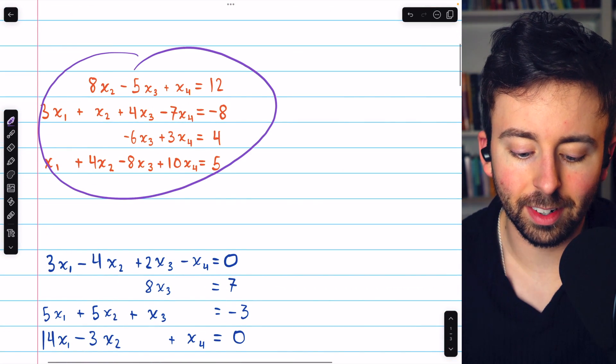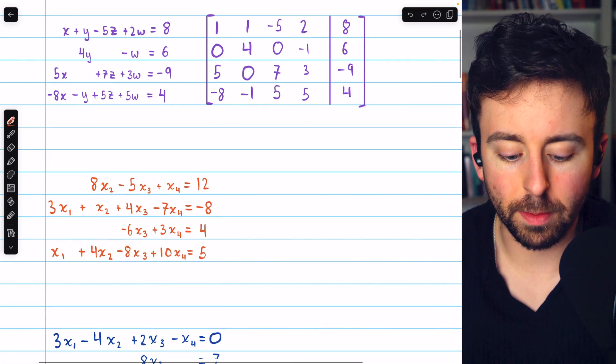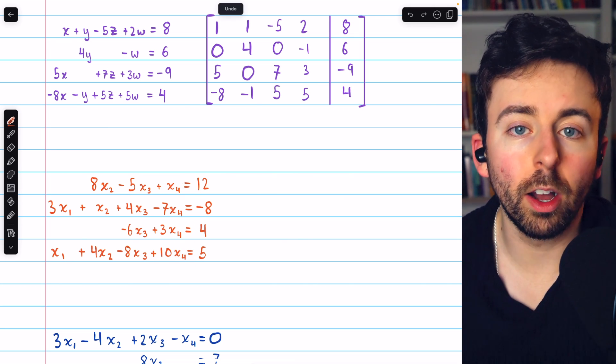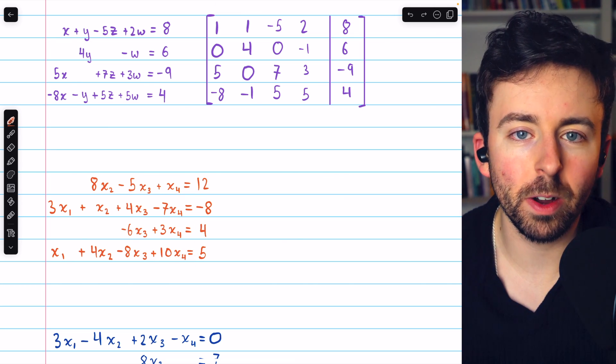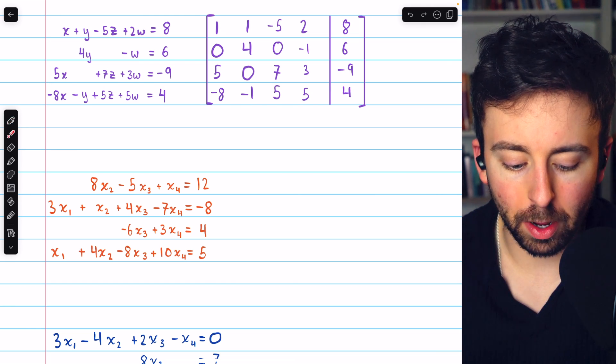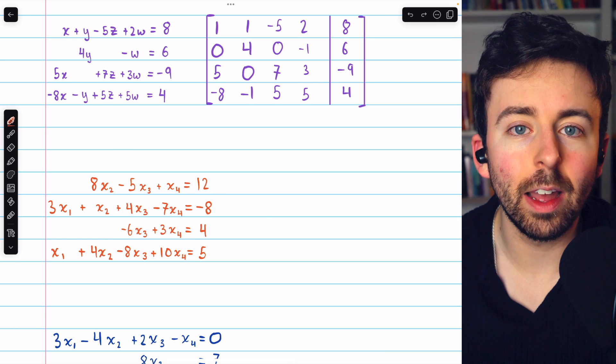Give it a try yourself for this next example. Beginning to talk through this, how many rows should our augmented matrix have? Well, there are four equations. So, our augmented matrix should have four rows. How many columns? Well, we see four variables, x1, x2, x3, and x4. So, we'll need five columns.